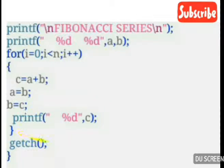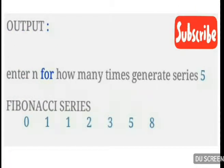After completing the loop, we write getch and close the void main curly bracket. Now let's see the output. The program asks 'Enter N for how many times to generate series.' I enter 5, so the series looks like: 0, 1, 1, 2, 3, 5, and 8. I hope you really understood this. Please share this information among your friends and don't forget to subscribe to my channel. Thank you.